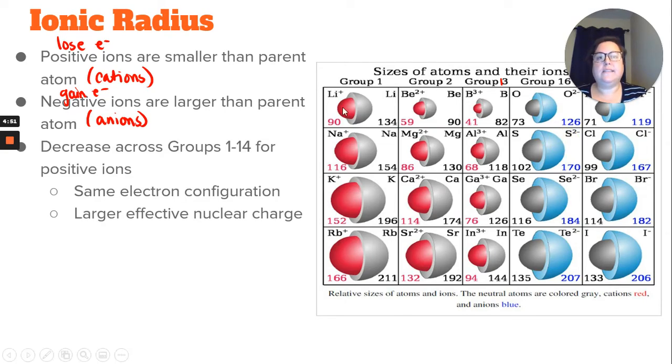Positive ions, if you notice, they're decreasing as you go from groups 1 through 13, and that's because of the larger effective nuclear charge. So boron here has more protons, less electrons in ratio, and so it's going to be able to reduce in size even more so than the lithium ion.